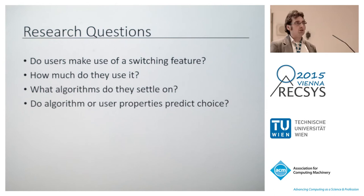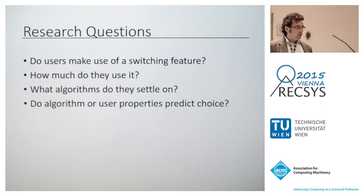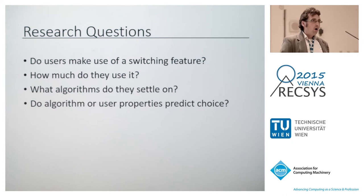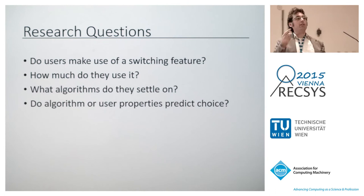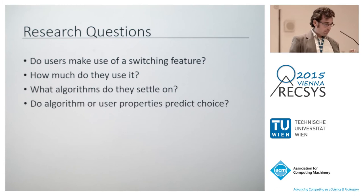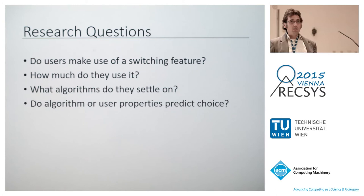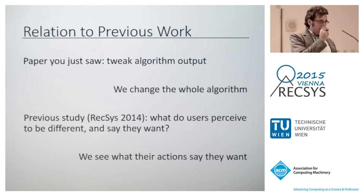We have four specific research questions: do users use the switching feature, and if so how much and how? What algorithms do they tend to settle on? Do properties of the recommendations or of the users predict their preferences? The short answers are: yes, a little bit, and then they leave it alone. They prefer personalized algorithms with a slight preference for SVD, and we haven't yet been able to figure out what predicts preferences.